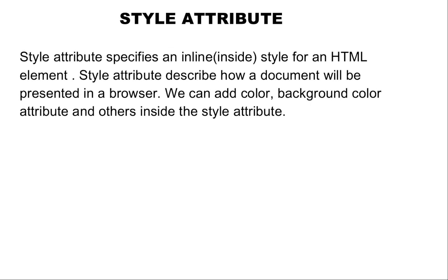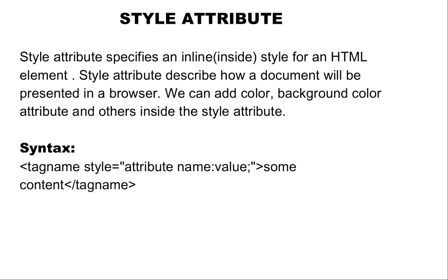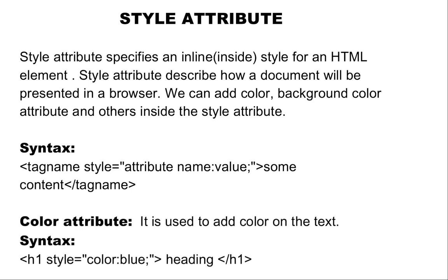The syntax for justify: open the p tag, then 'align' is the attribute and 'justify' is the value, then some content, and close the p tag. Next is the style attribute. The style attribute specifies an inline style for an HTML element and describes how a document will be presented in a browser. We can add color, background-color, font-family, and other properties inside the style attribute. Next is the color attribute, which is used to add color to the text. Syntax: open the tag, for example h1, then style equals attribute name 'color' and value 'blue', then some content, and close the h1 tag.